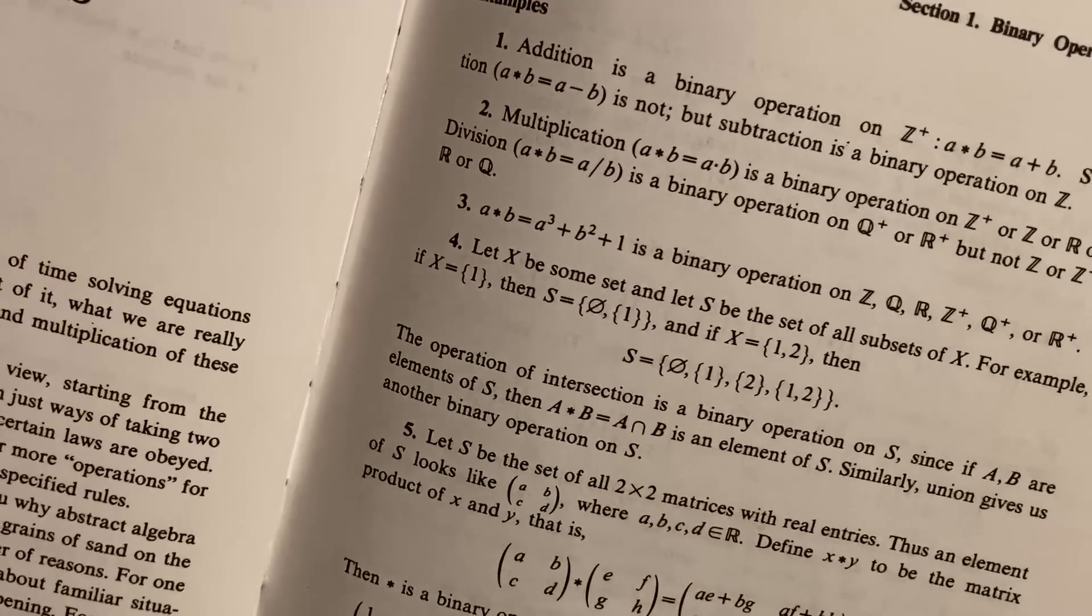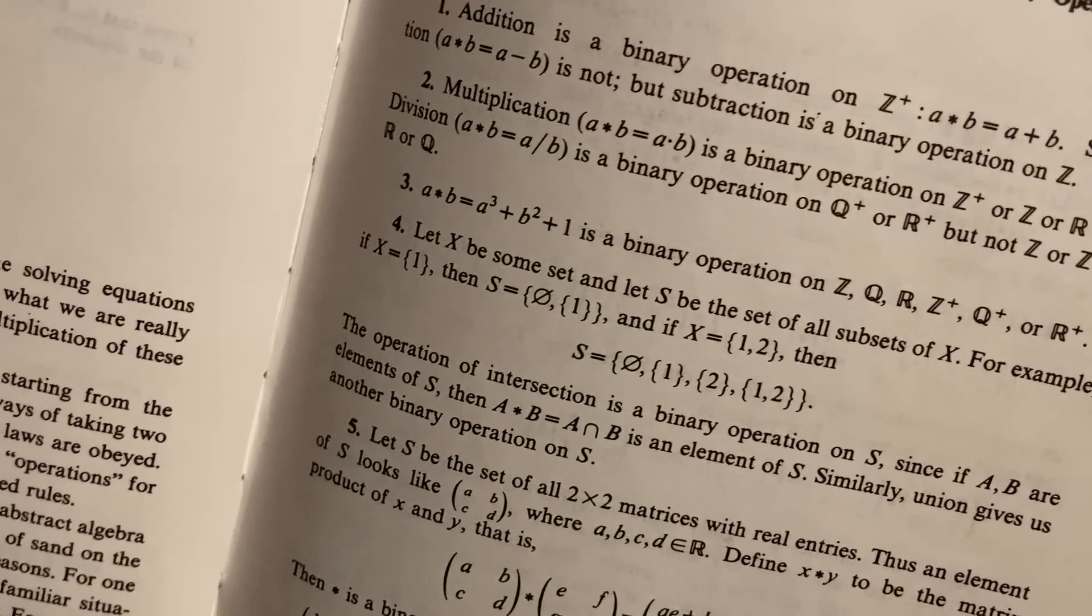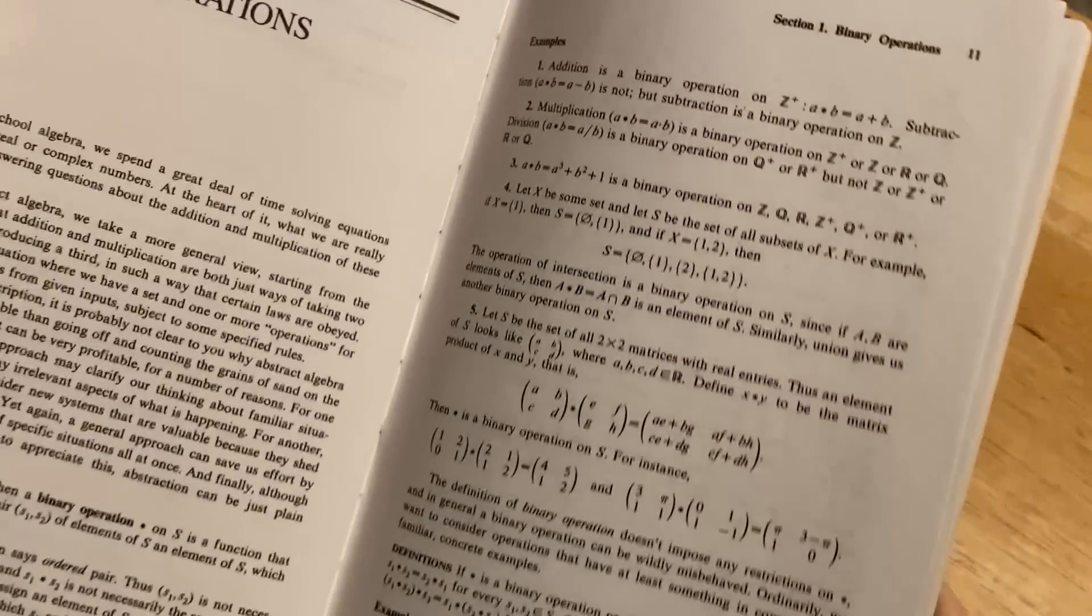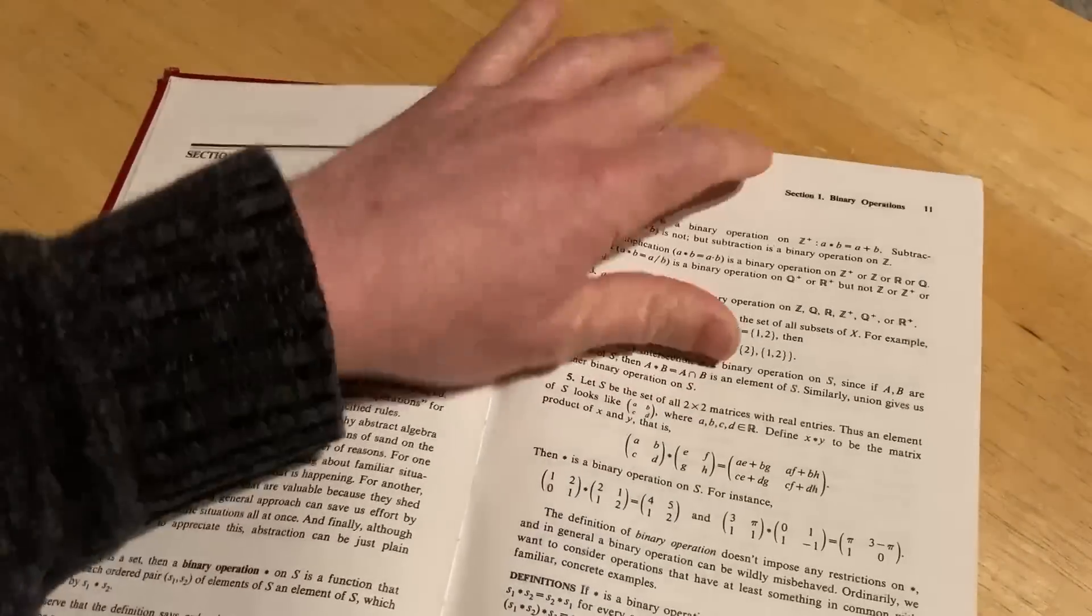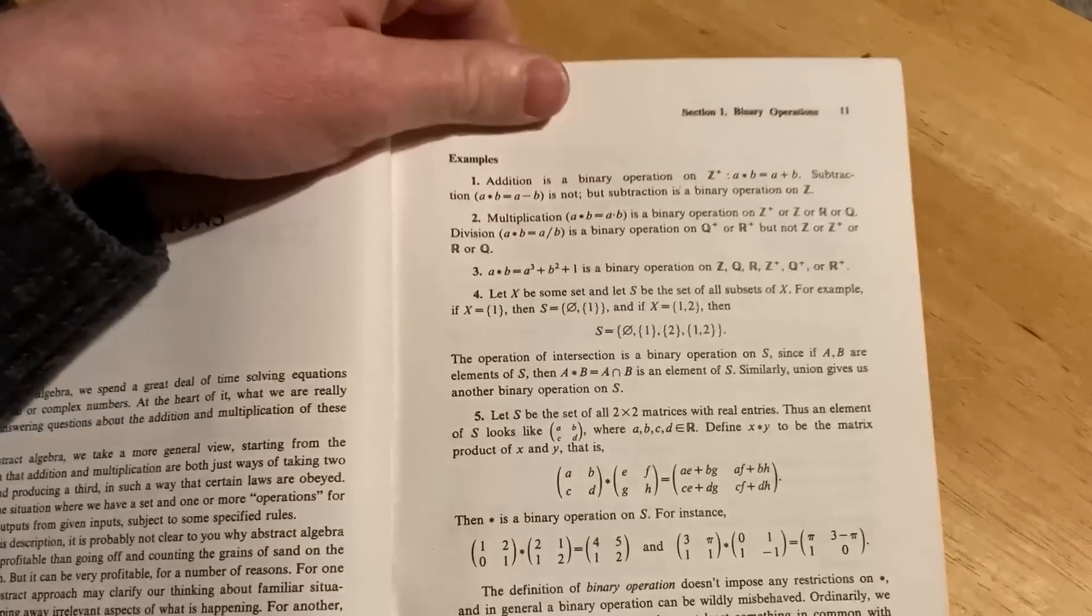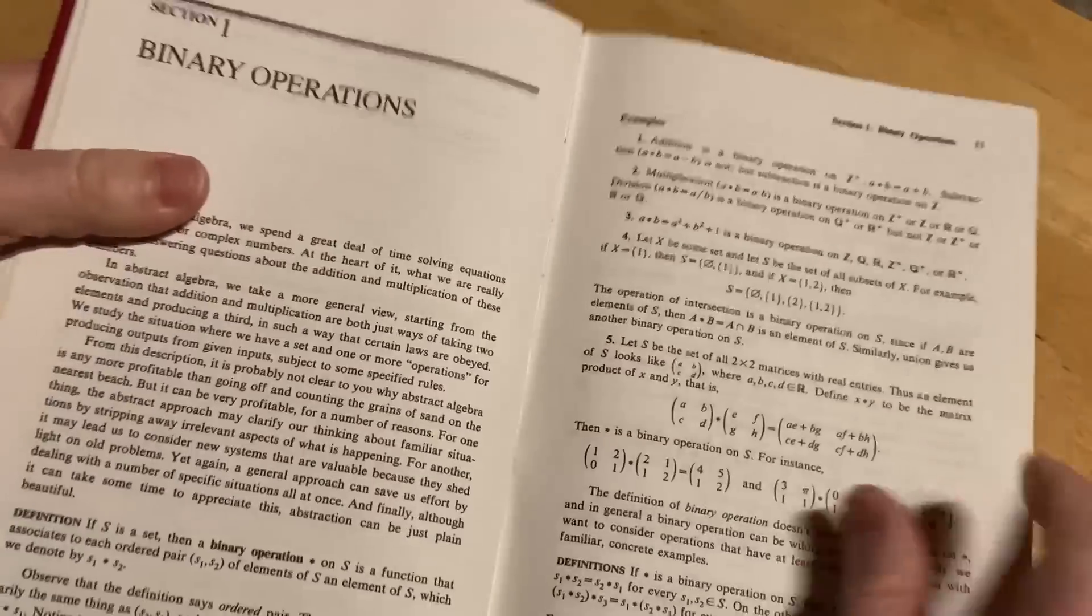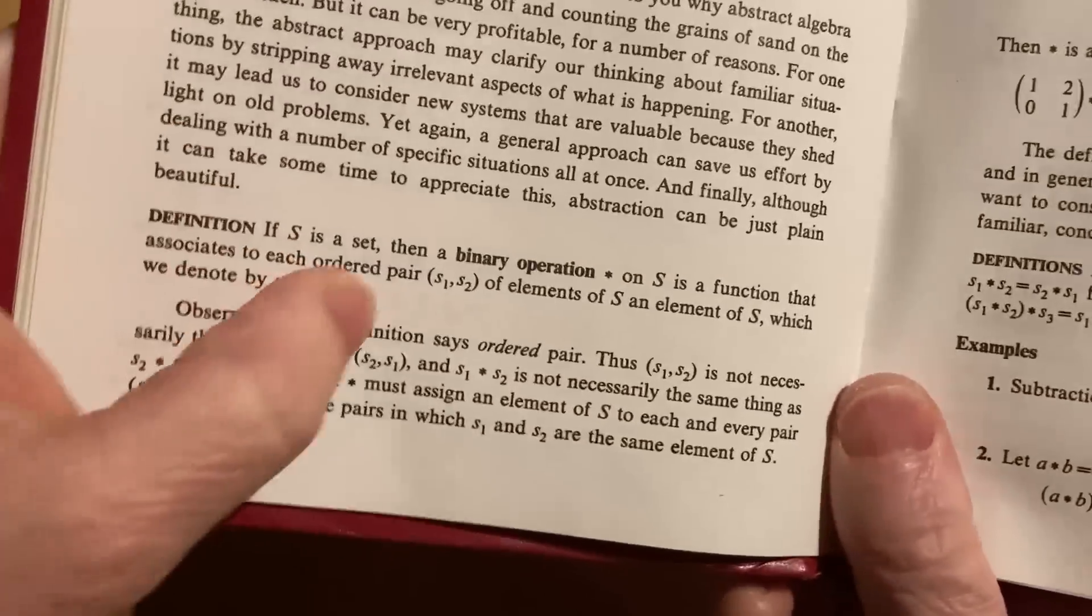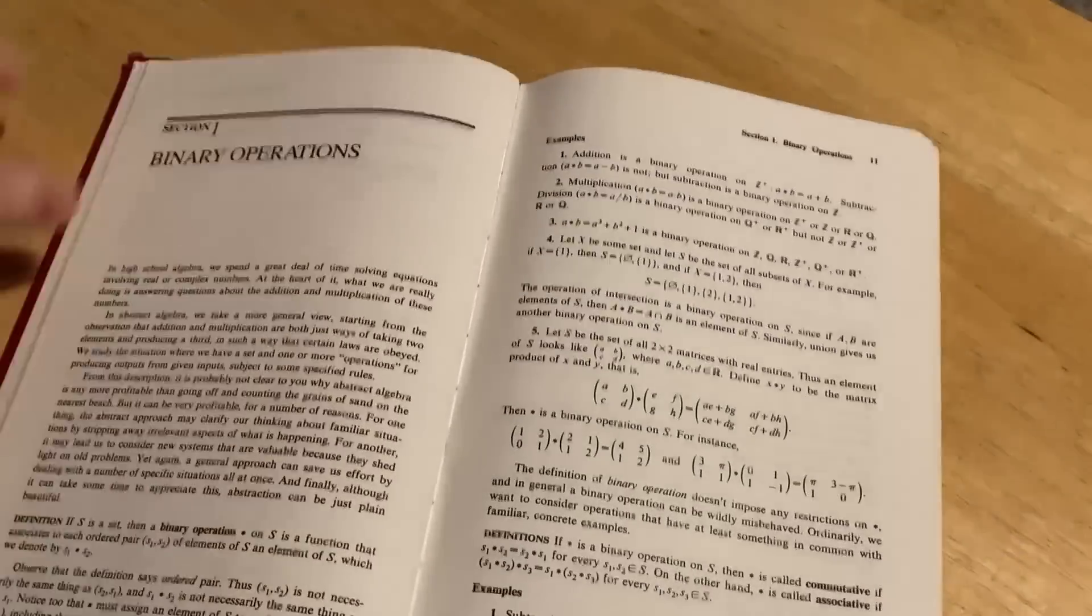And then here we talk about addition is a binary operation on the positive integers, so is multiplication. Subtraction would not be a binary operation on the positive integers because you could do like 2 minus 3, which is negative 1, which is not a positive integer. So in order for it to be a binary operation, it has to always work. It has to be defined via this definition. That's how we define a binary operation as a function. So it's pretty cool.